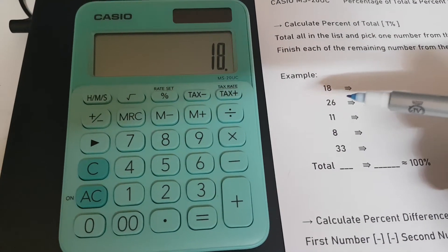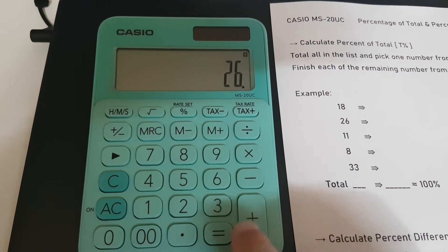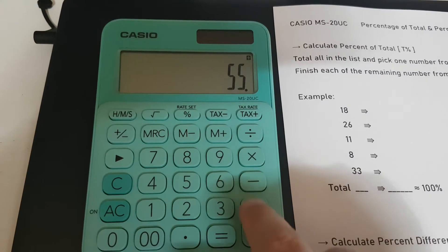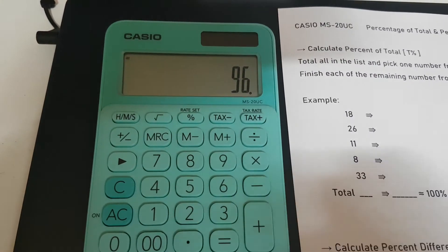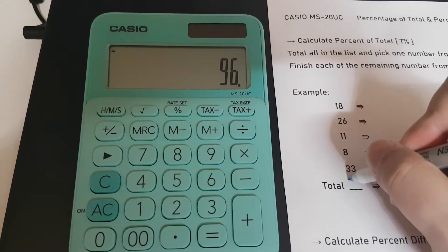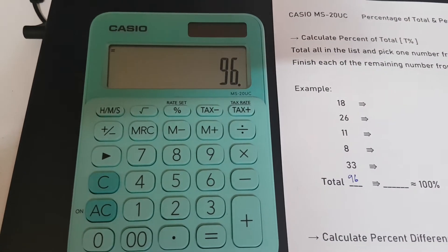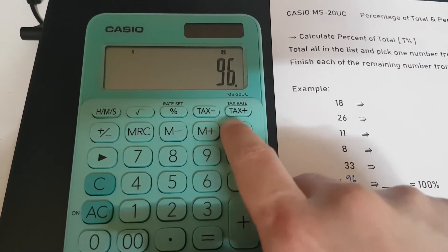18 plus 26 plus 11 plus 8 plus 33, that's going to be 96. And then press the Y-D-Y.